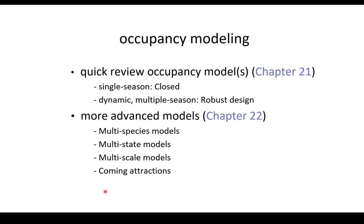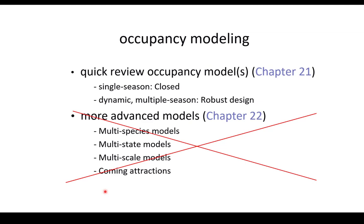So let's begin. What do we mean by occupancy models? We're going to split this into a couple of pieces — we'll largely look at single season and then what are known as dynamic and multiple season occupancy models. Single season models are very closely aligned with the closed population abundance estimation models we looked at earlier. The dynamic and multi-season models, where you look at how occupancy changes from year to year, are based upon the robust design. We're going to skip the more advanced models — multi-species, multi-state, multi-scale — and focus on single season and multi-season models, both covered in chapter 21.